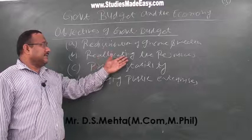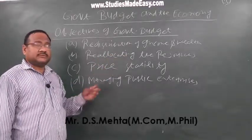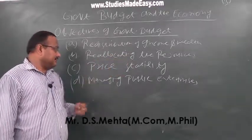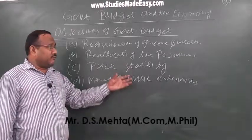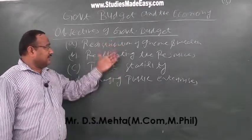The objectives of government budget are: reallocating the resources, price stability, and managing public enterprises. We will take each one by one.